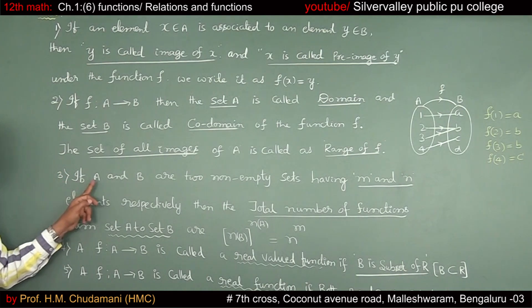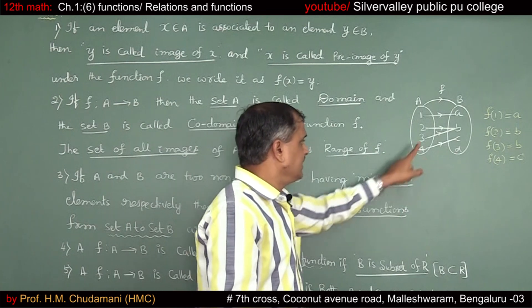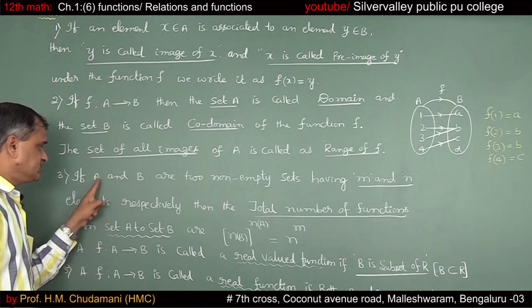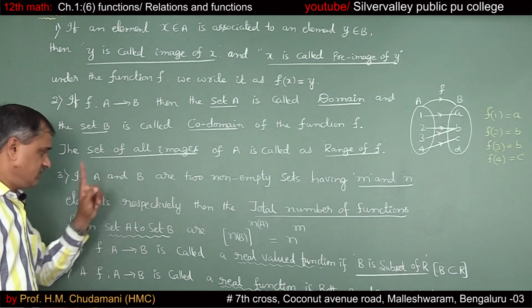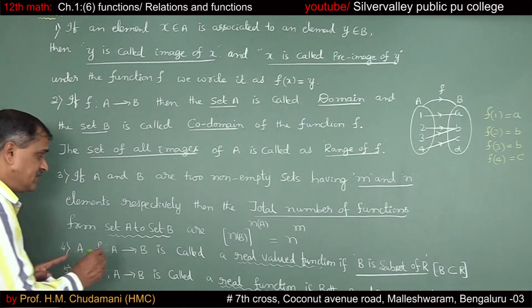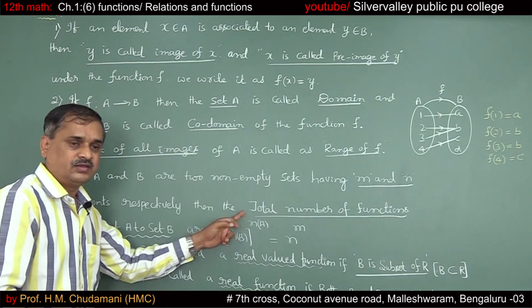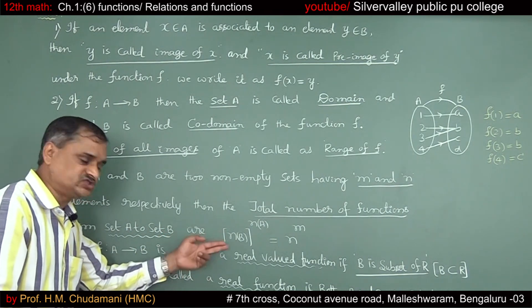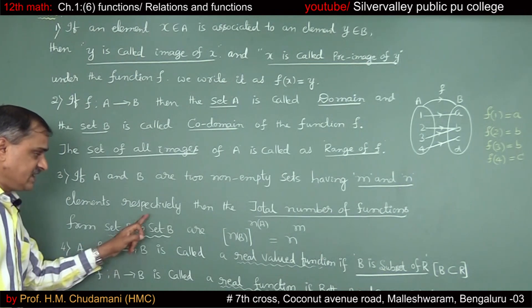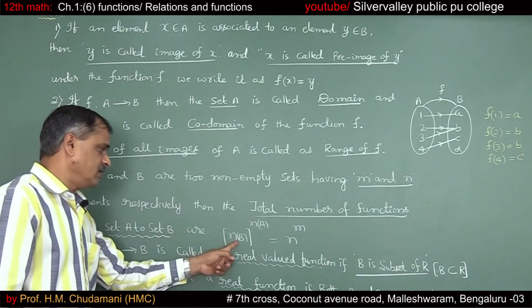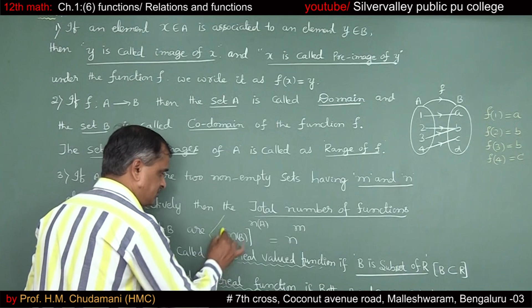Note 3: If A and B are two non-empty sets having M and N number of elements respectively — that means the cardinality of set A is M and the cardinality of set B is N — then the total number of functions from set A to set B is N(B) to the power N(A), which equals N to the power M. You need to remember this for MCQs.